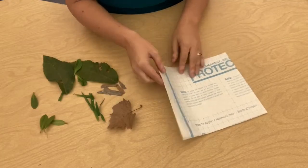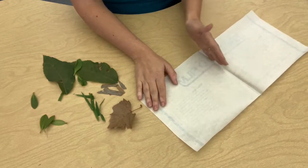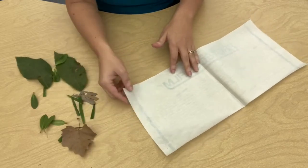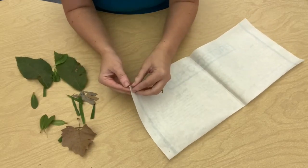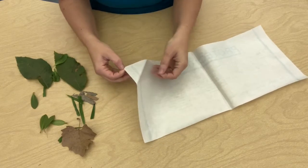To make our sun catcher we're going to need to use our sticky paper, but we don't want to take the sticky paper off all the way. There's a line in the middle and we're only going to take off part of our sticky paper. I'm going to have mom and dad help you and we're going to peel up the edge.